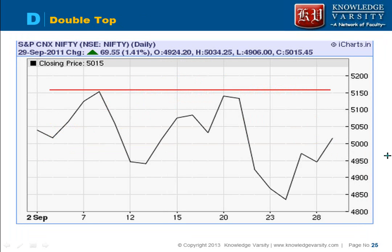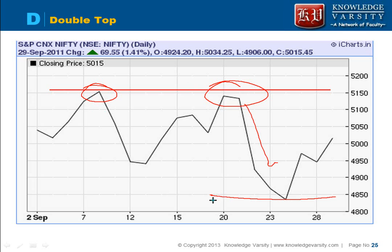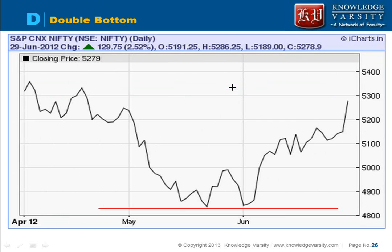A double top means that the stock will hit the resistance line twice. After hitting it, the stock price will decrease. Please note that it is not able to penetrate this resistance line, so it will fall. The idea is that after hitting the resistance line it is going to fall. You can get a target here — this is your double top.